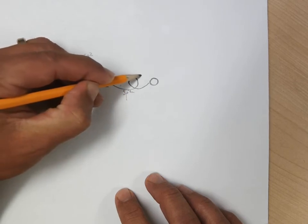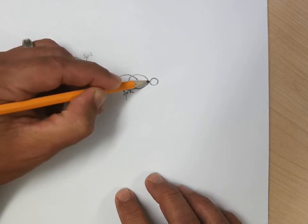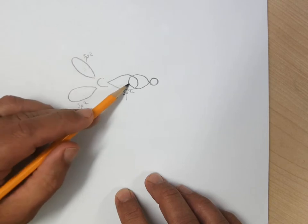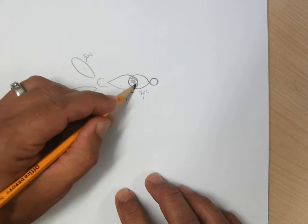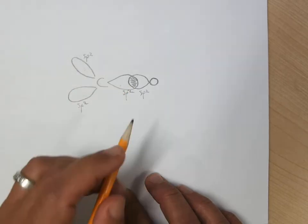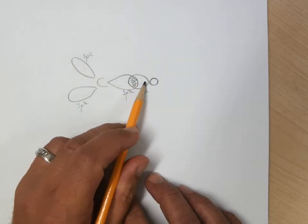And if I draw the SP2 orbital of the oxygen aimed at the SP2 orbital of the carbon, then we can see this nice sigma area of overlap, and this orbital overlap forms a bond.